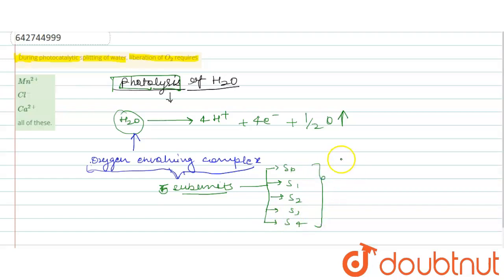Some ions will be required with respect to these subunits: manganese, chloride ions, calcium ions, and carbonate ions. So these all ions are required.